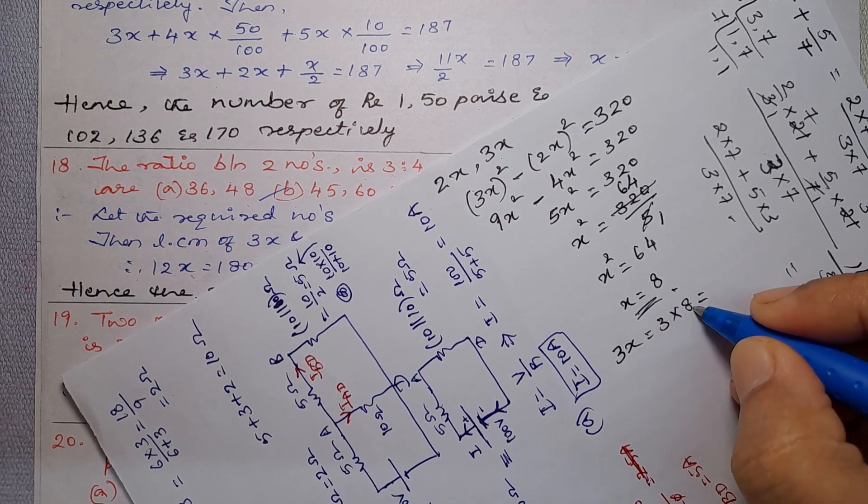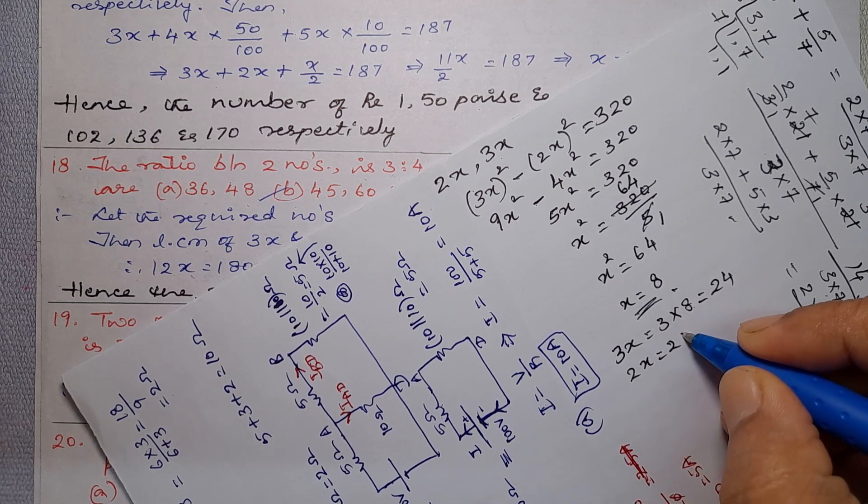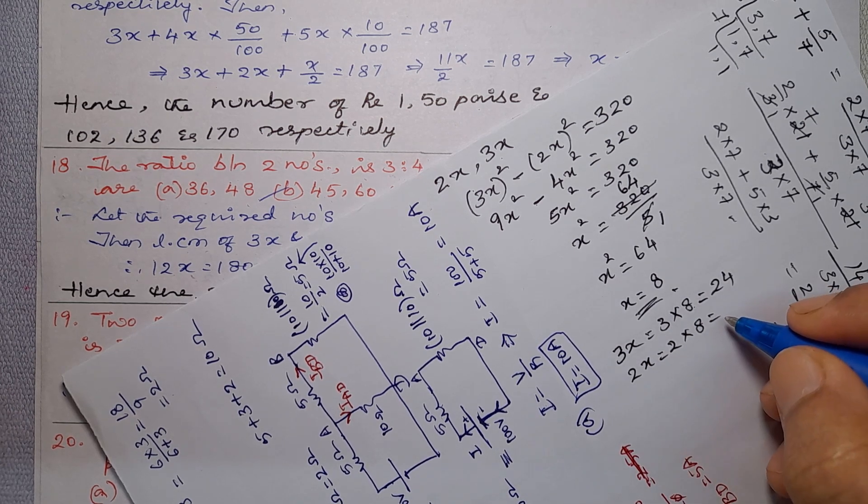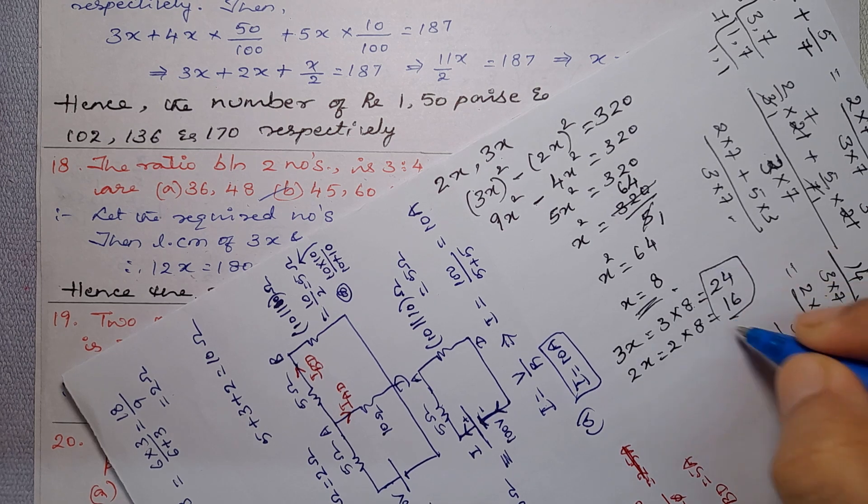That is 3 eights are 24, and 2x is 2 into 8. So 2 eights are 16. 16 and 24.